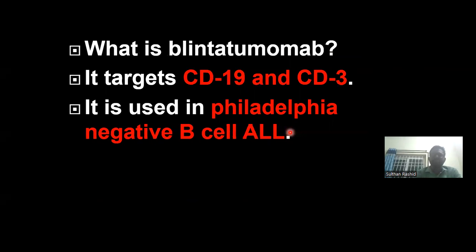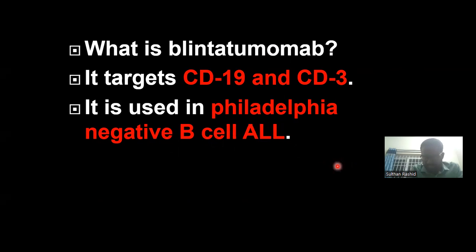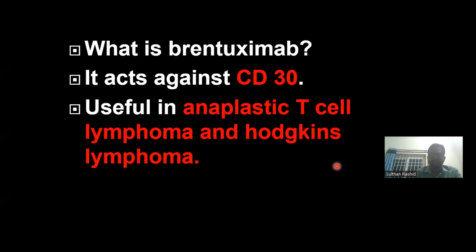Now comes blinatumomab. This is a monoclonal antibody which acts against CD19 and CD3. It is particularly used in the condition called Philadelphia-negative B-cell ALL — acute lymphocytic leukemia.